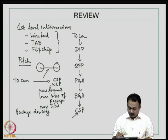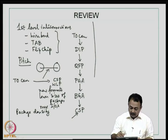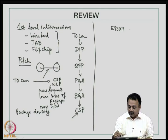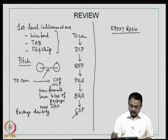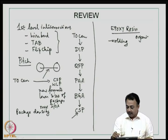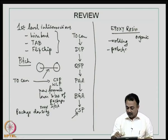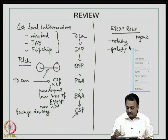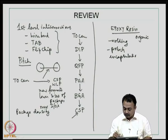CSP is called chip size or chip scale package. This is what we saw last class. We also briefly mentioned the term epoxy resin, because I showed you different samples of single chip packages in which I showed a molding compound being used to protect the first level interconnections. That means you use an organic resin to cover up and protect the first level interconnections like wire bond, TAB, or flip chip, so that they are protected from the environment. This is some sort of a protection, or you can call it encapsulation.